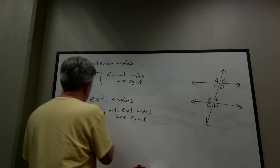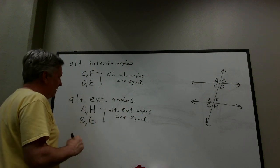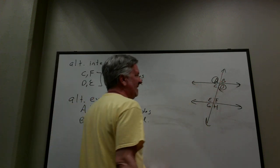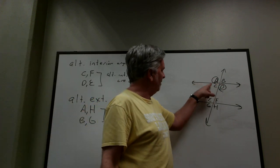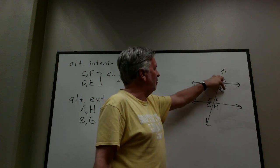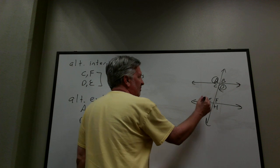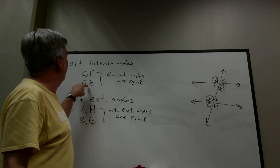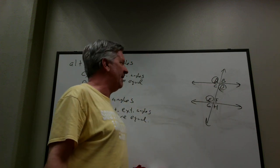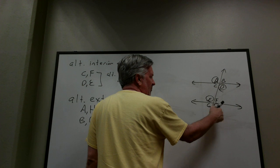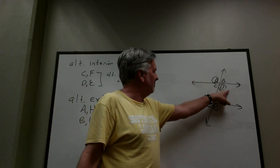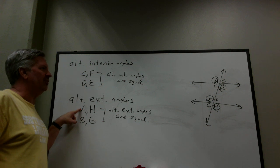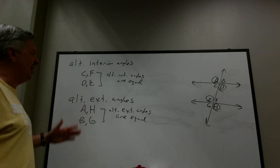Let me convince you that A and H are equal using facts we've already discussed. A and D are vertical angles, so they're equal. D and E are alternate interior angles, so they're equal. E and H are vertical angles, so they're equal. Therefore A equals D equals E equals H — so A and H have to be the same. If you believe vertical angles are equal and alternate interior angles are equal, alternate exterior angles being equal comes for free.